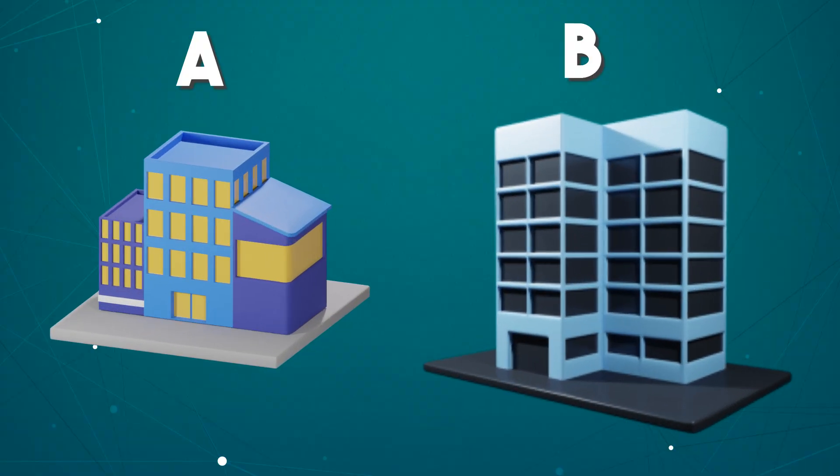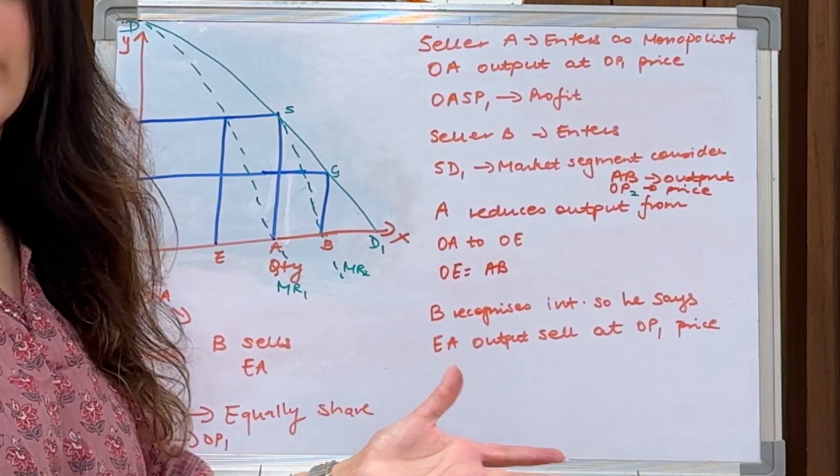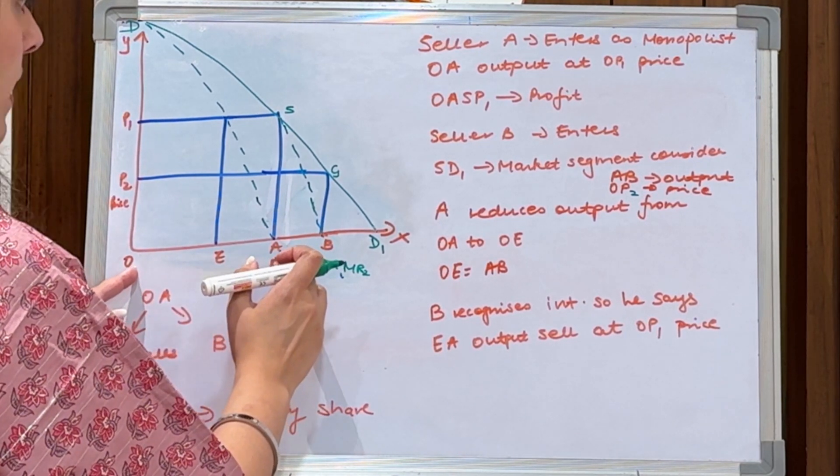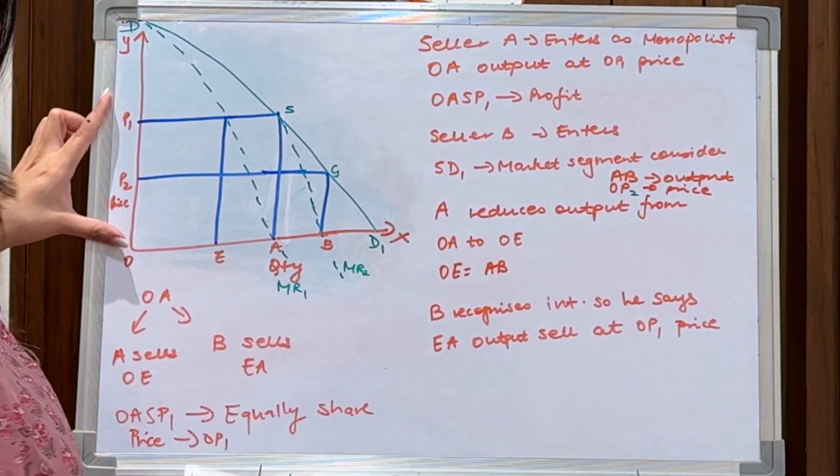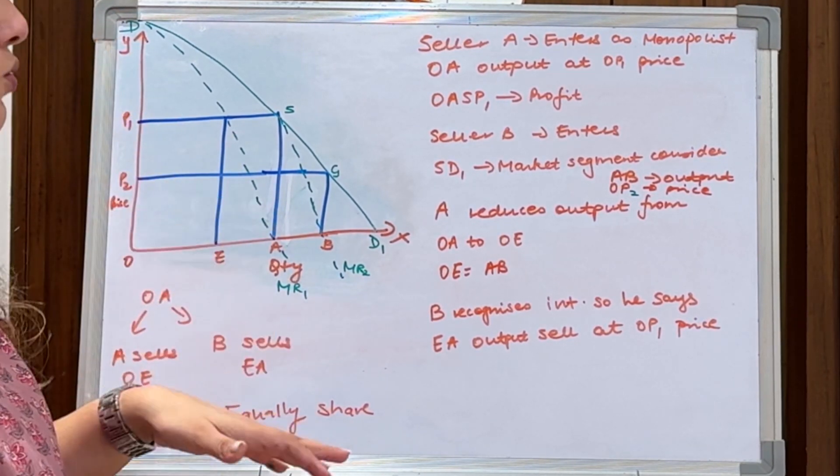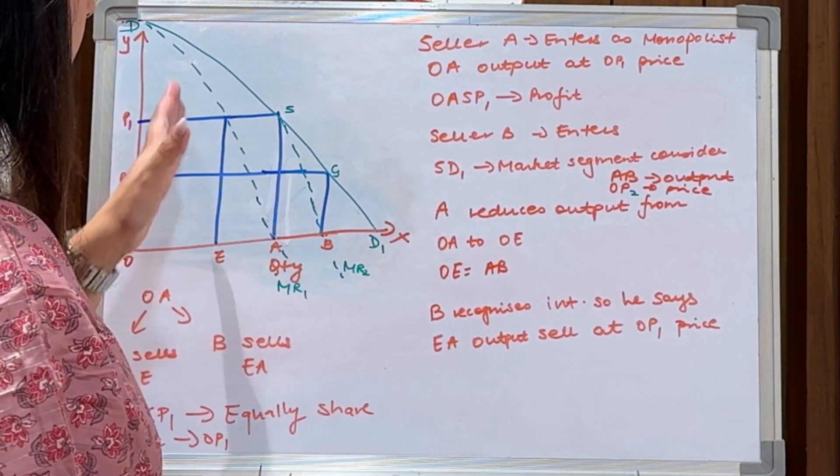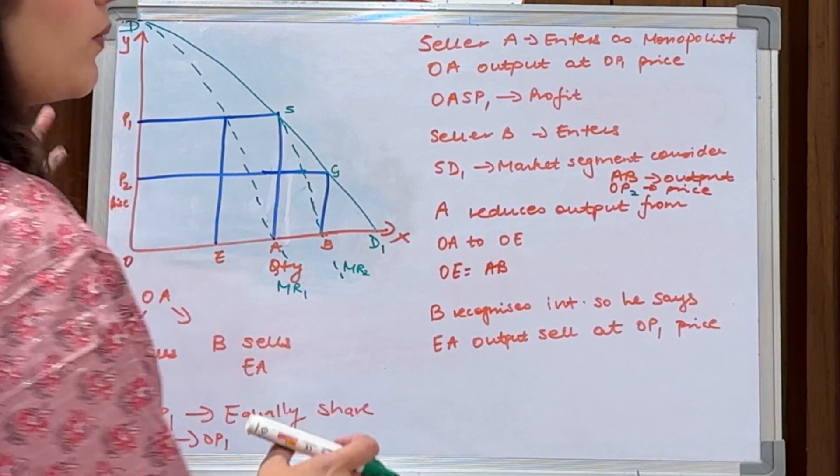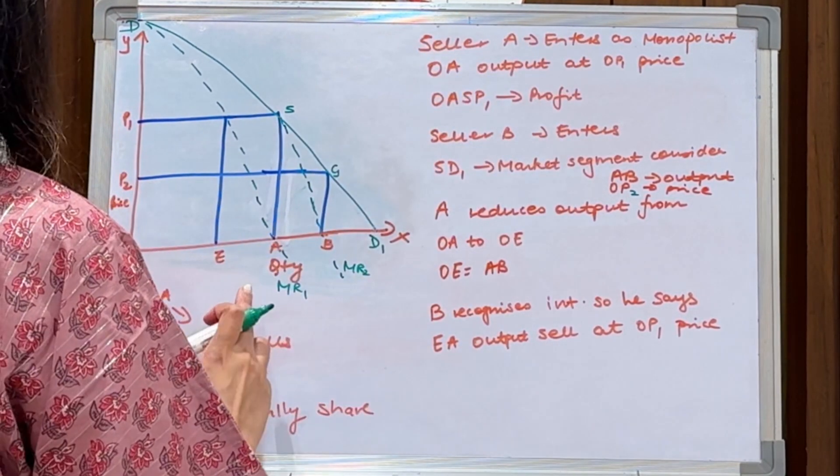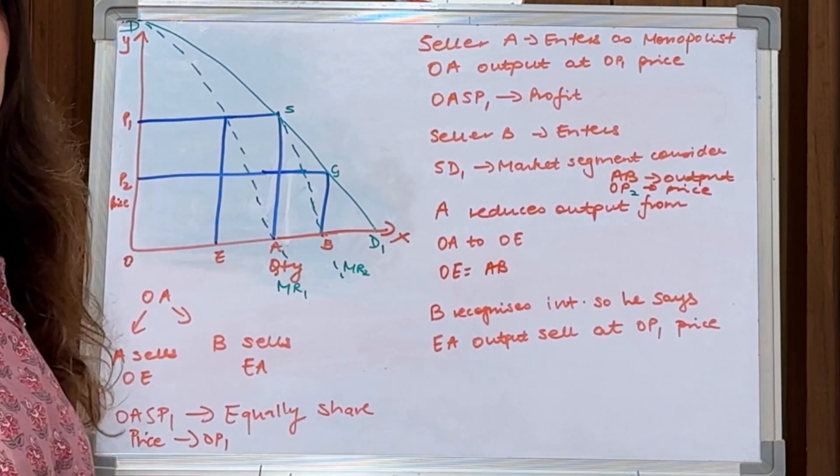We have two firms, A and B. Seller A, if he enters into the market as a monopolist, there's no one, right? He's the first one, he is leading a monopoly. He is producing OA amount of output and at what price is he selling? OP price, which is a very good high price. These are the two curves, MR1 and MR2, which are drawn and dotted for A and B respectively. On the x-axis we have quantity and the y-axis we have price. What is the profit of seller A, who is a monopolist? OASP - this whole chunk is his profit.